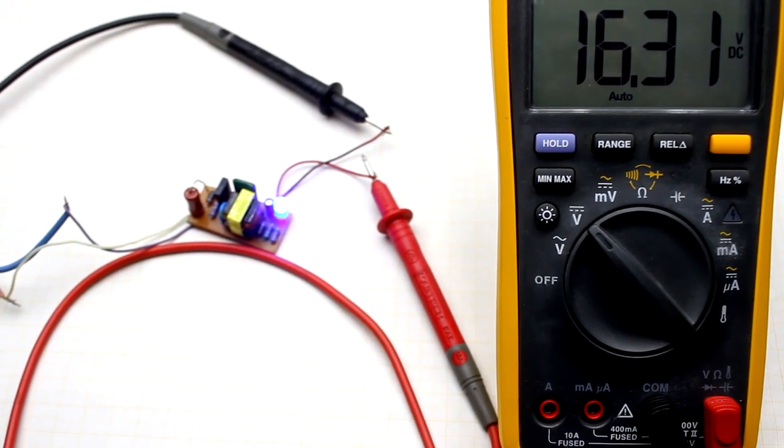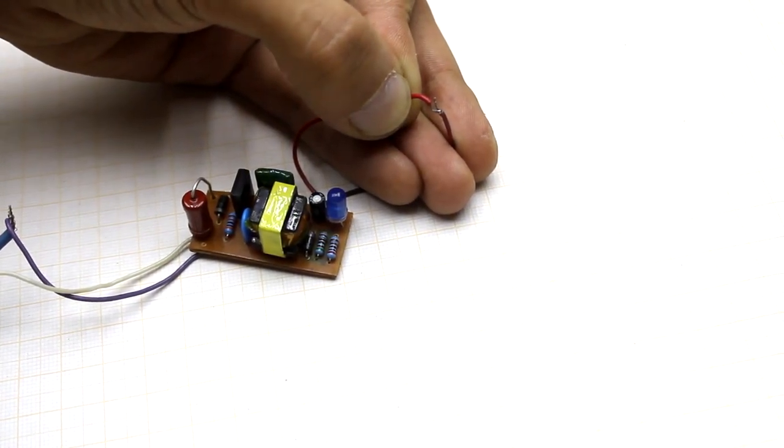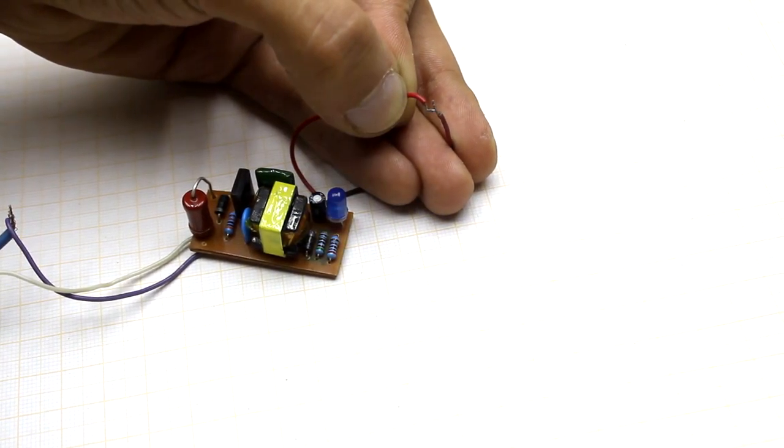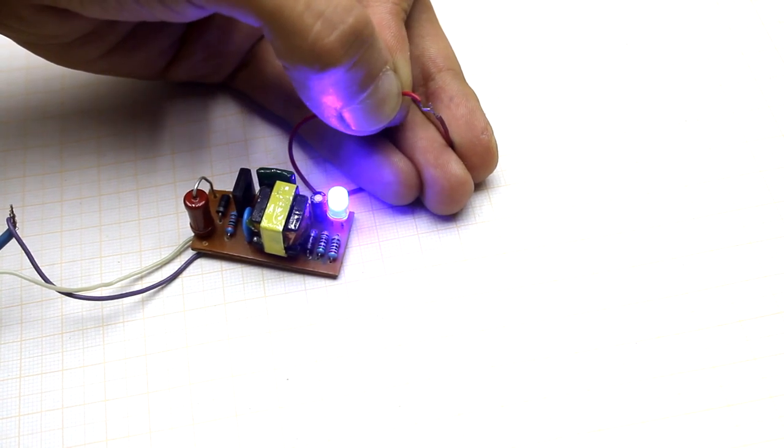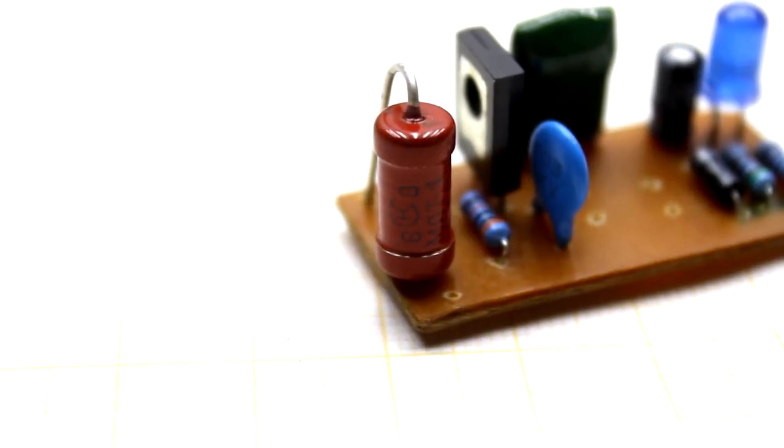The circuit has no stabilization of the output voltage and protection against short circuits. Maybe it's looking strange, but this circuit is not afraid of short circuits. In the case of short circuits, the current in the primary circuit naturally increases, but it is limited by the previously mentioned resistor.